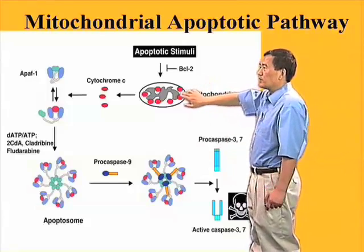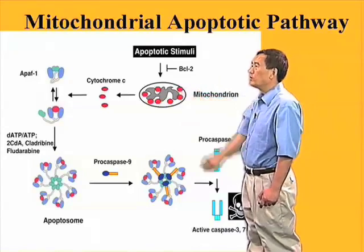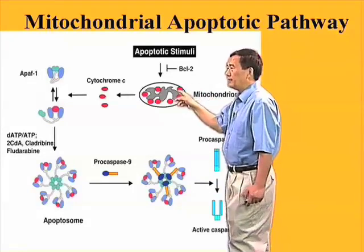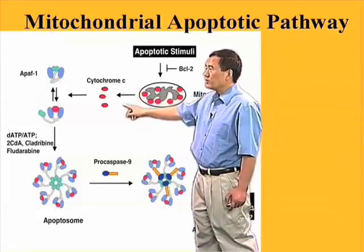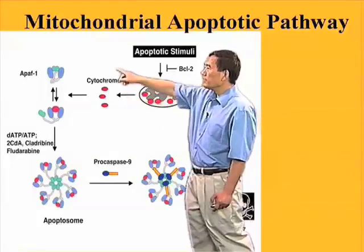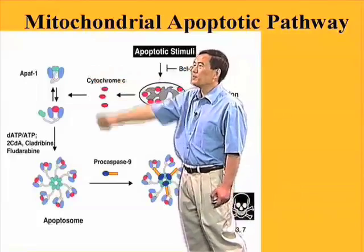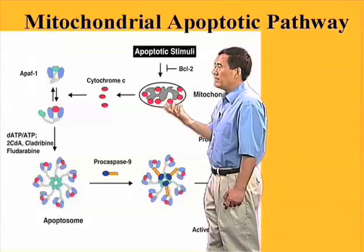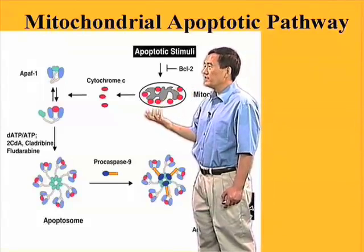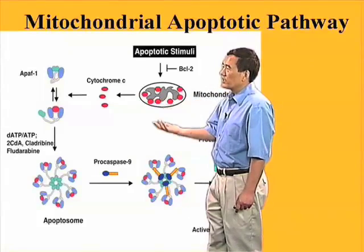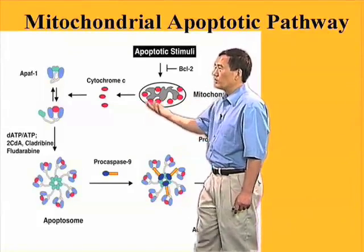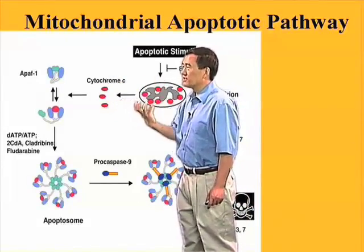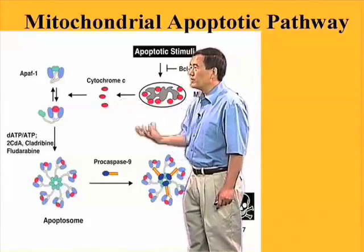As a result, proteins such as cytochrome C, which are normally localized in the intermembrane space of mitochondria, will come out of the mitochondria and find their binding partner, APAF1. APAF1 has a good affinity for cytochrome C. When cytochrome C comes out into the cytosol, it will meet APAF1 and specifically bind APAF1 at the WD40 repeat region.